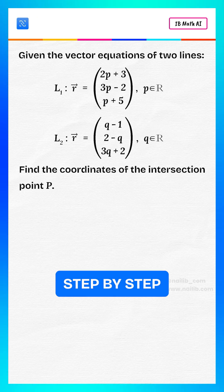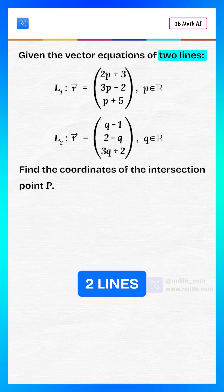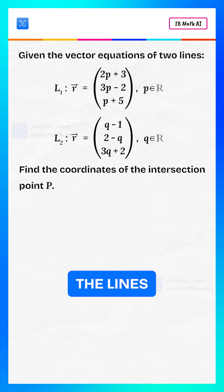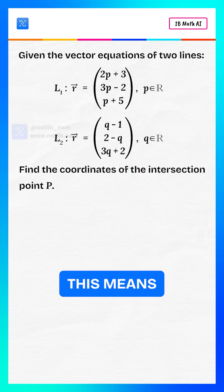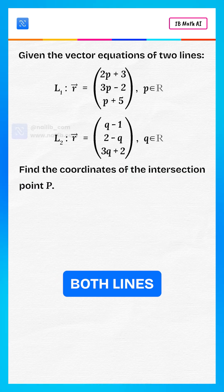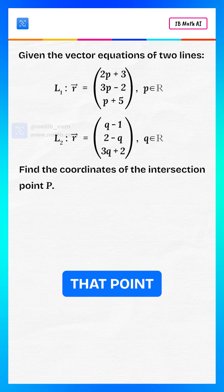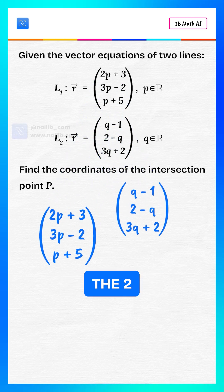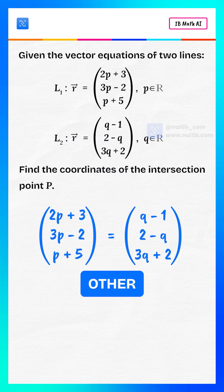Let's solve step by step. We're given two lines in vector form. We're told that the lines intersect at point P. This means the position vectors of both lines are equal at that point.